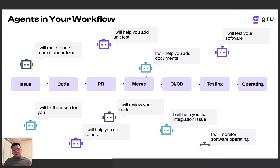Imagine this is your workflow in the future. The workflow will have a lot of AI agents — small agents living inside your repository workflows at different stages to solve different problems, including unit tests, fixing bugs, writing documents, submitting code reviews, and handling releases. Humans can then focus on more creative parts.